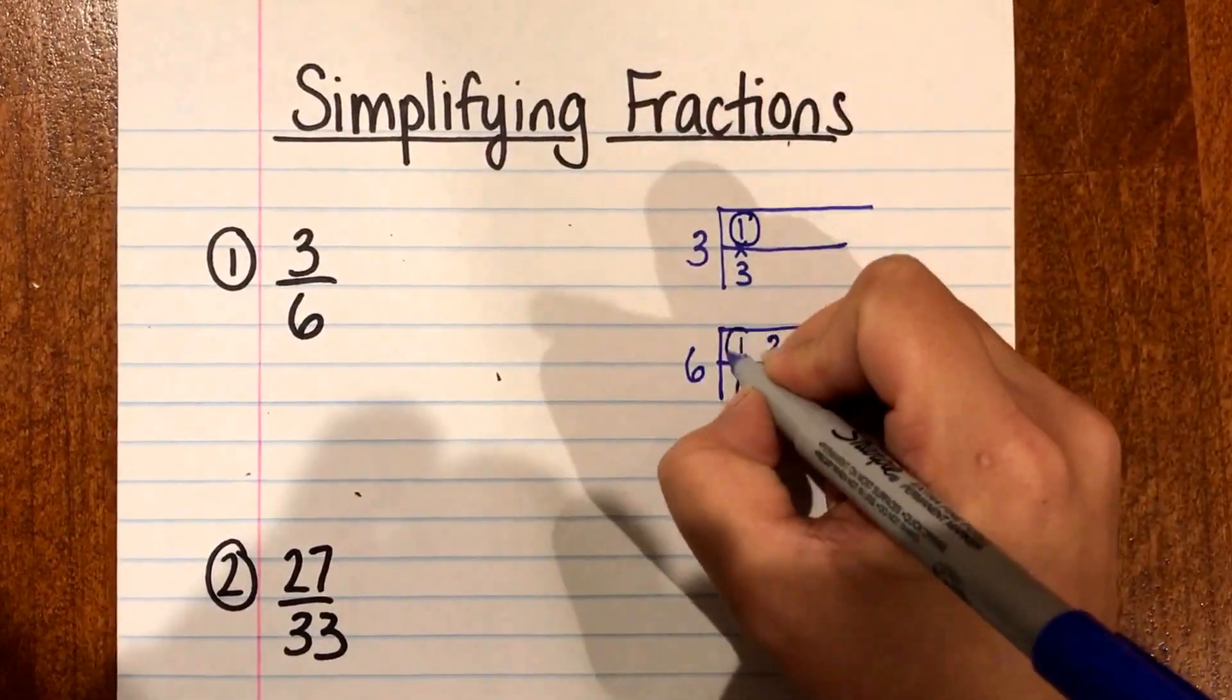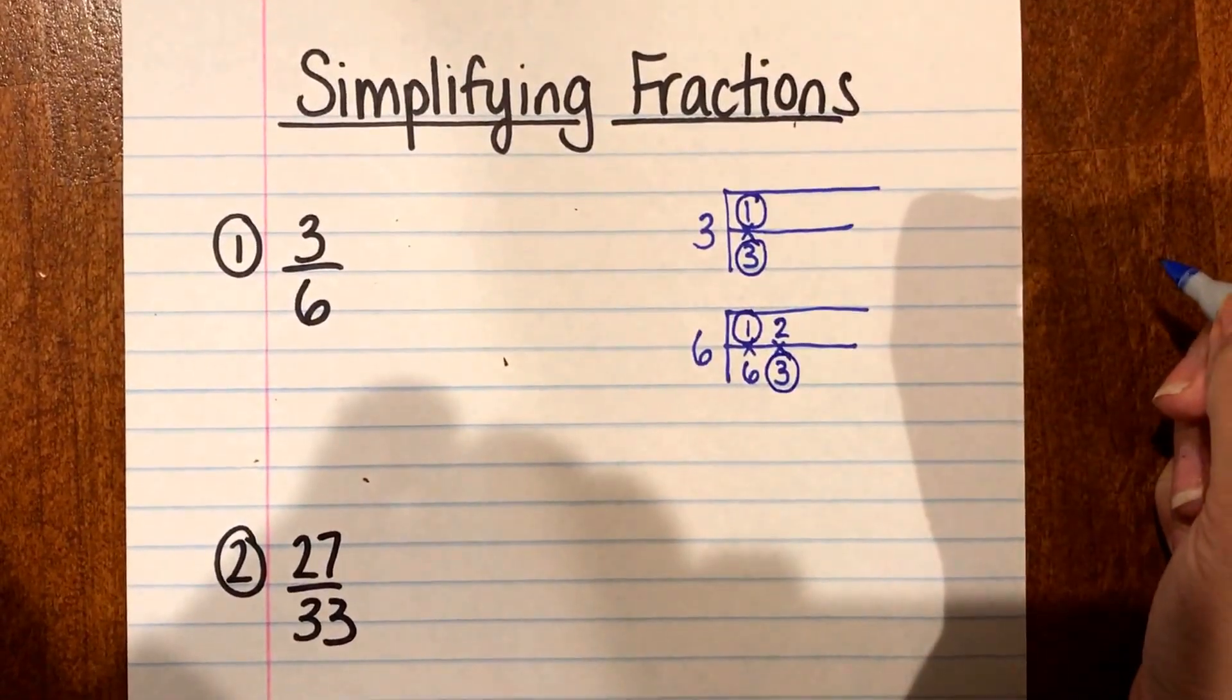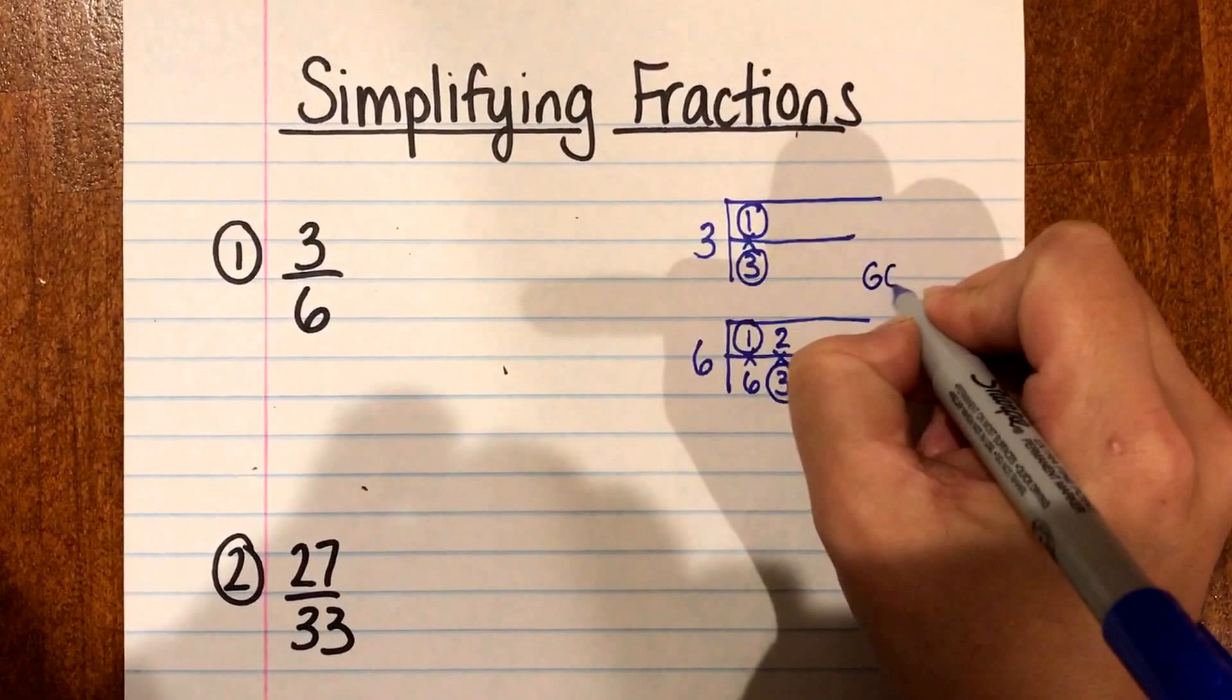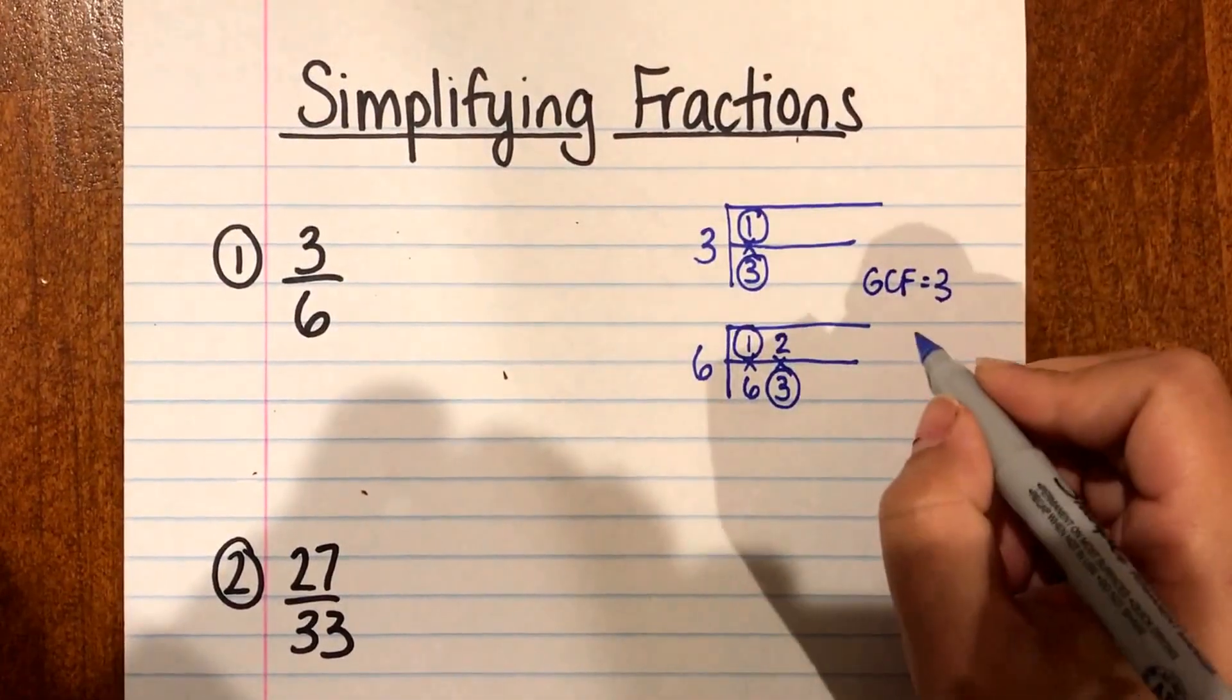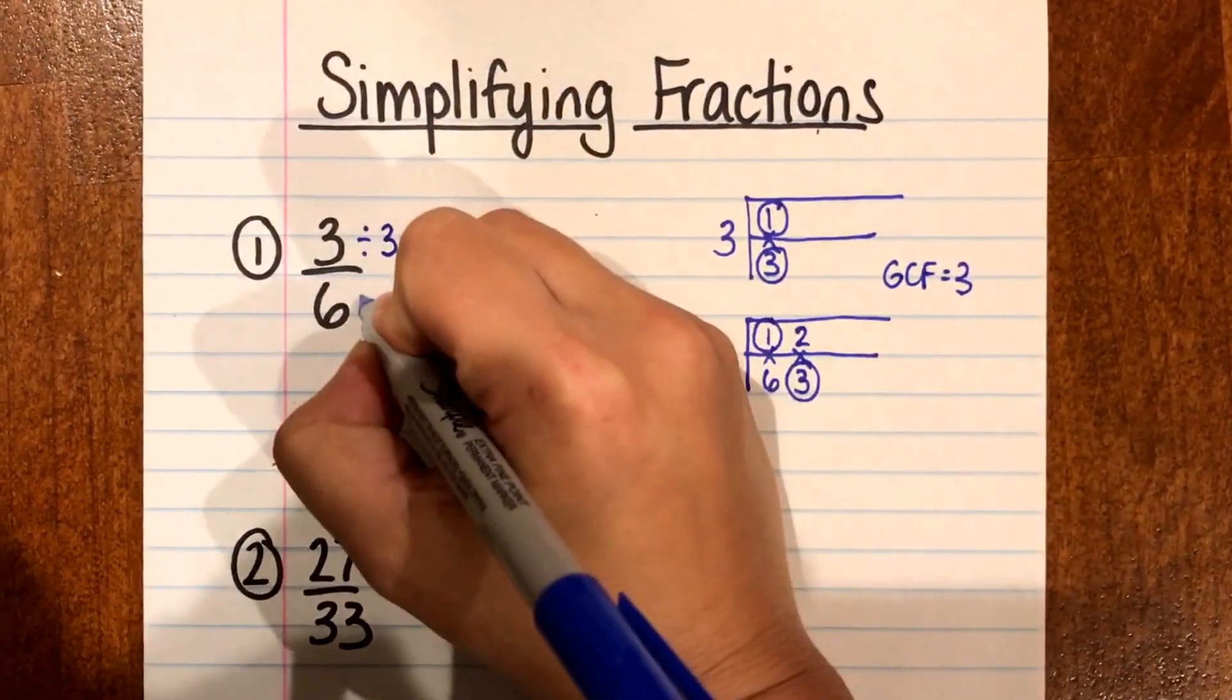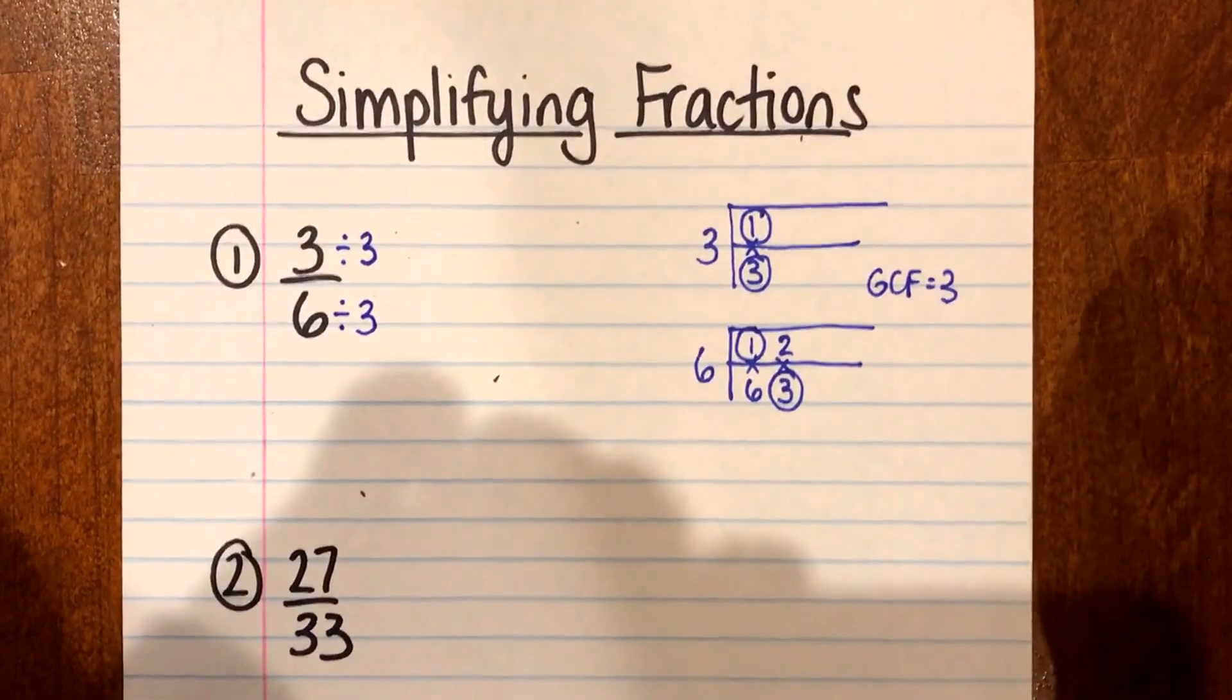So the common factors are 1 and 3 and looking at the common the greatest one is my 3. So I know my greatest common factor is 3. Now using that greatest common factor I'm gonna go back to my fraction and I'm gonna divide both my numerator and my denominator by that greatest common factor.